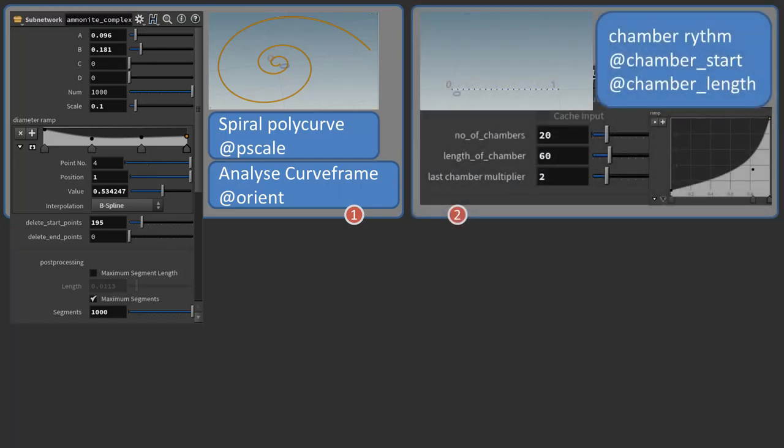This is the other interface to set up the number of chambers and the rhythm or better the sizes of the individual chambers. For that, I use a line with the desired number of points same as the amount of chambers. Every point represents one of the chambers. Each point of the line will get attributes, chamber length, chamber start and also chamber end.